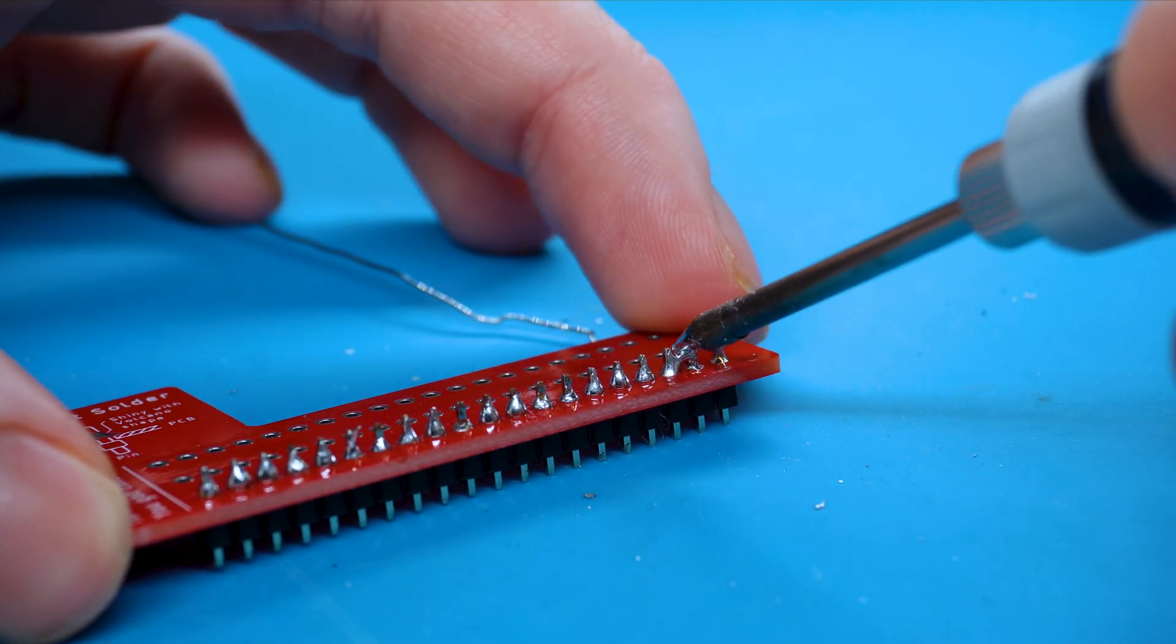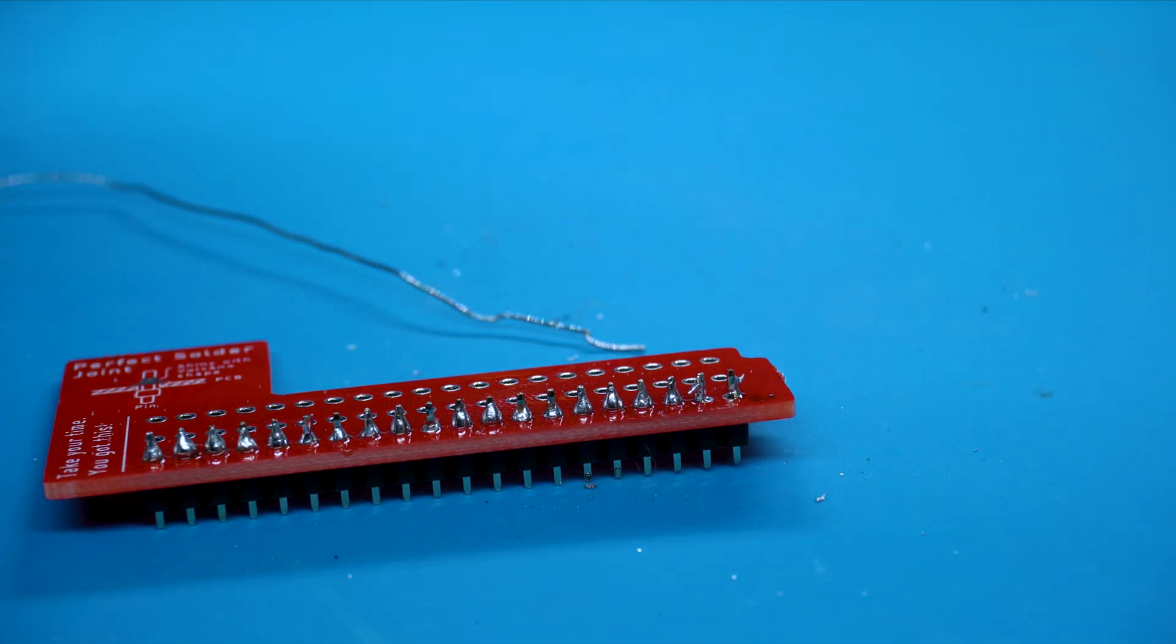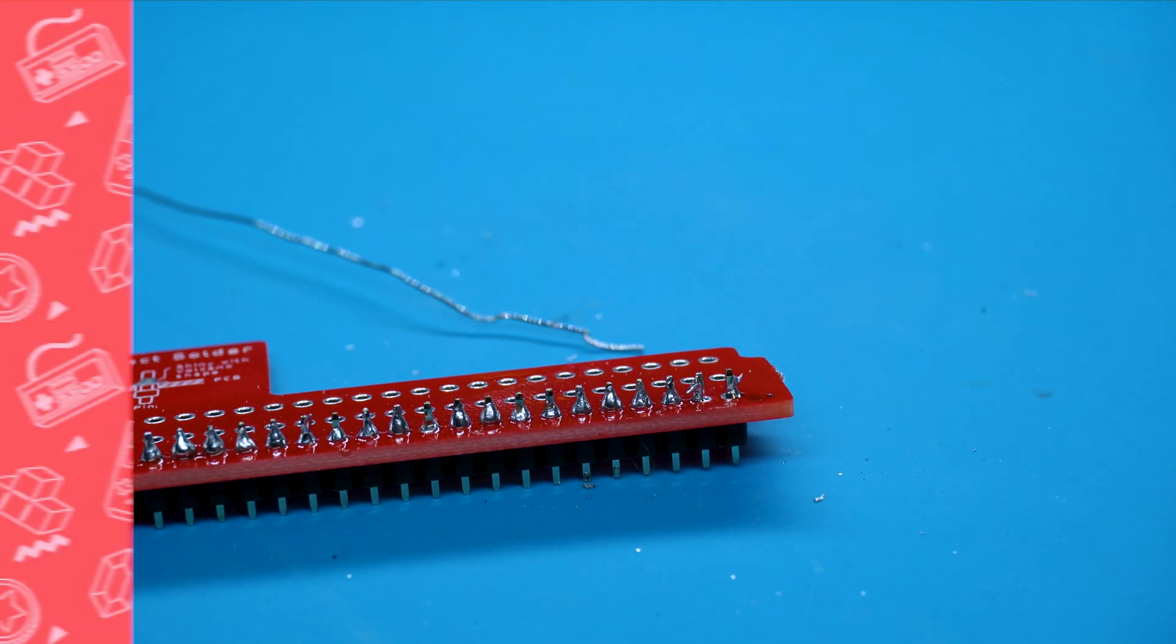And then you want to put your soldering iron tip with no solder in between the two pins and use it to divide, so you want to drag the solder away. And there you can see the bridge has now disappeared. We want to once more clean the tip of our soldering iron and now we have fixed it.